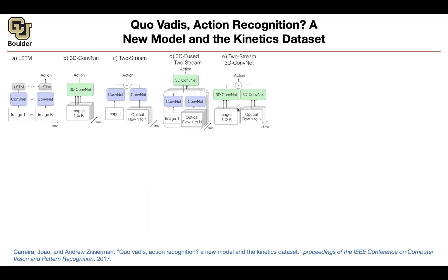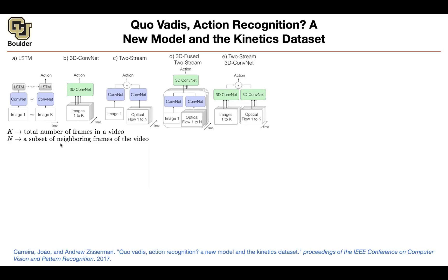You have multiple frames and the corresponding optical flows. You push the frames through 3D convolution rather than 2D convolution, push the optical flows through a parallel 3D convolution, then combine them and report the classification score. K is the total number of frames and N is the total number of neighboring frames used for the optical flow.